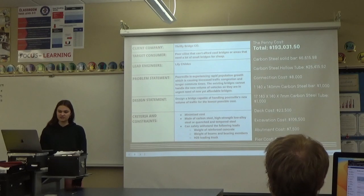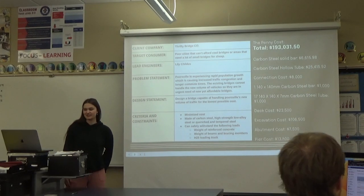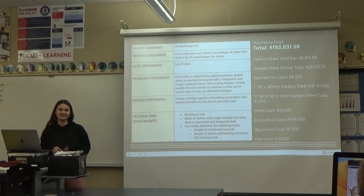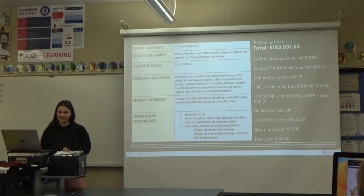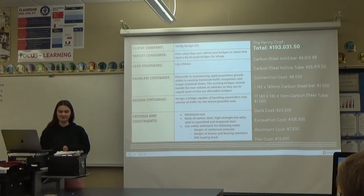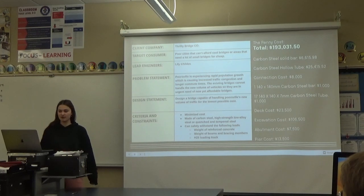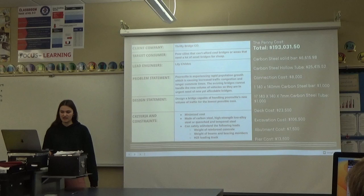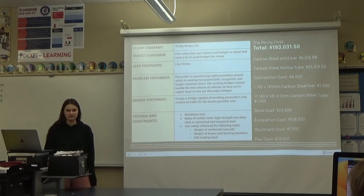So for the first one, I just said the target customer is like four cities, and they can't afford a bigger, cool-looking bridge, or they need a lot of bridges. And then for my problem statement, I came up with a town, and I said Poresville is experiencing rapid population growth, and it's causing increased traffic and longer commutes. So the existing bridges can't handle the new volume of vehicles, and they're just in urgent need of affordable bridges that can handle it. And I just said, make a bridge that can handle it for cheap.